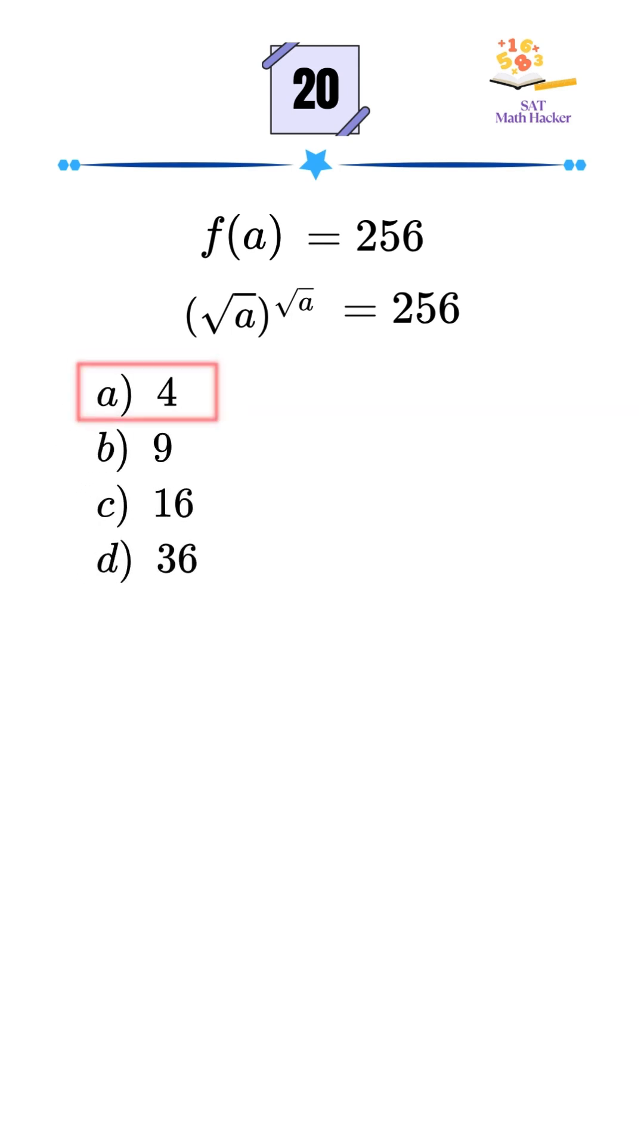First, try a equals 4. Square root of 4 equals 2, so 2 squared equals 4, not 256.